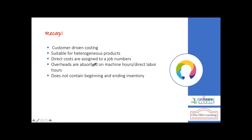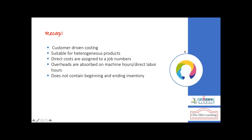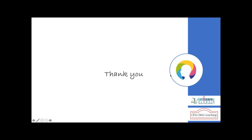Under job order costing, there is no beginning or ending finished goods inventory because production is purely based on customer specifications. There is no reason to produce more than required, and no reason to hold beginning finished goods. You have raw material used in the job, but no finished goods or work-in-progress beginning or ending balances.